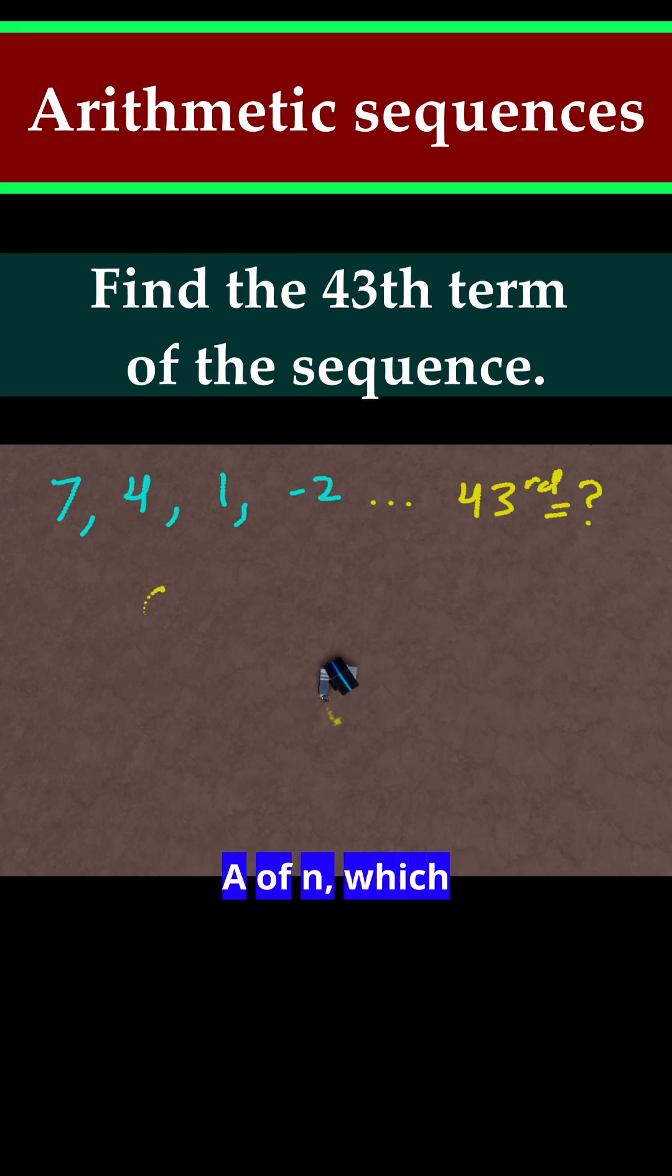The formula says a of n, which actually replaces with 43 since that's what we want, is equal to a of 1, which is 7. So we'll replace that.